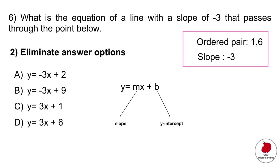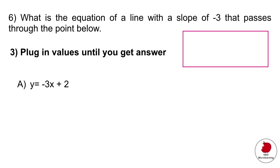Second, look at the answer options and eliminate wrong answers. The equation form is y equals mx plus b, where m is the slope. The question says slope is minus 3, but answer options C and D have a positive slope of 3, so you can eliminate those. Now you only need to determine which of the remaining two options is correct, by plugging in values.